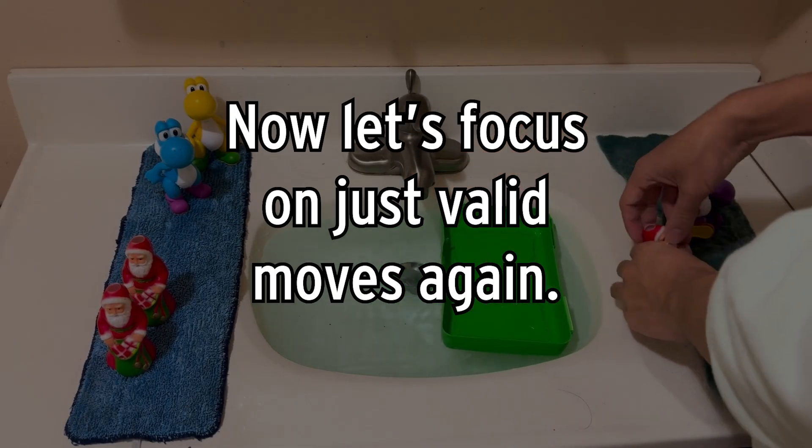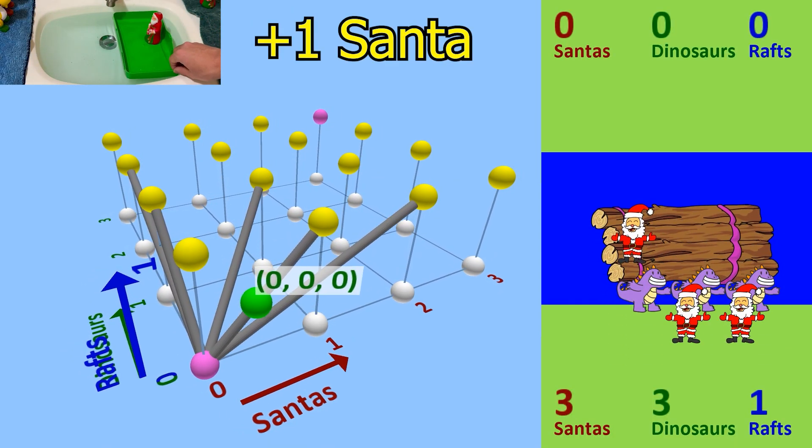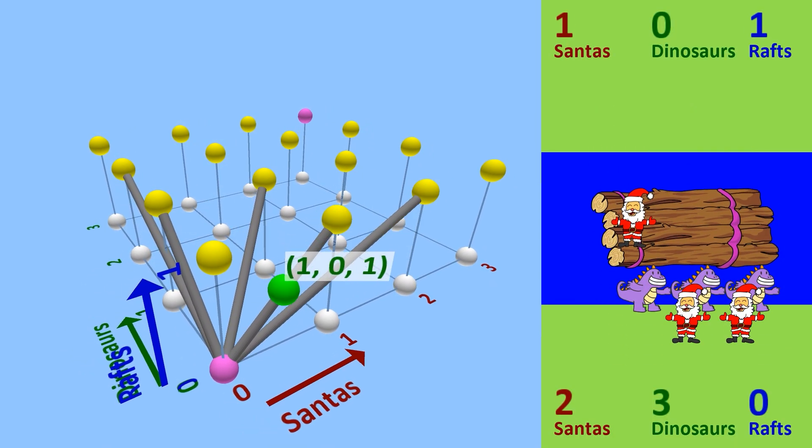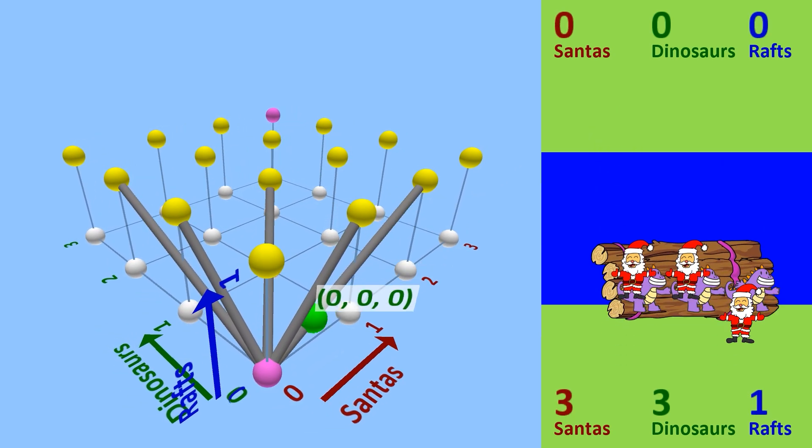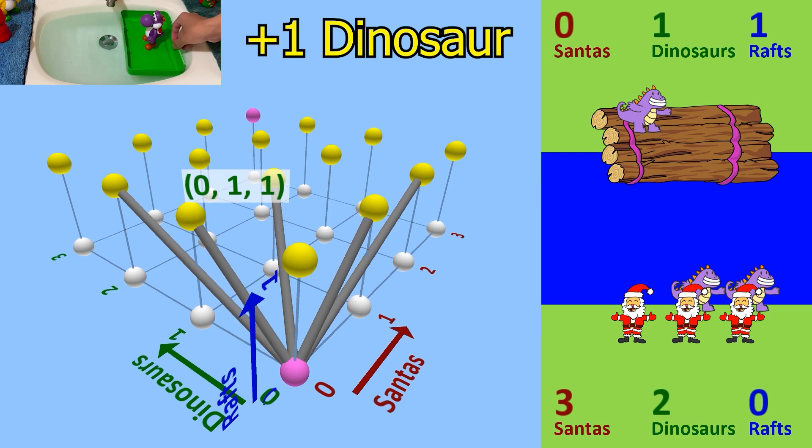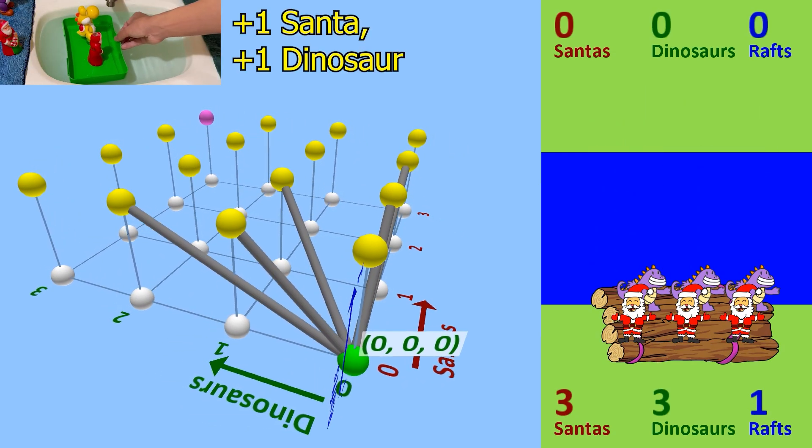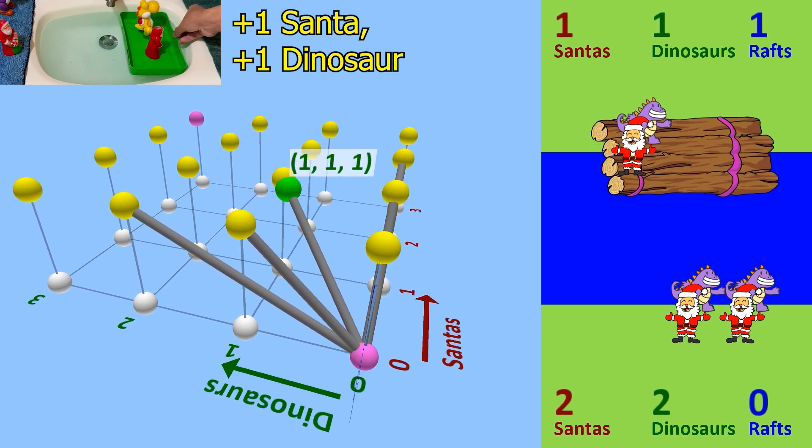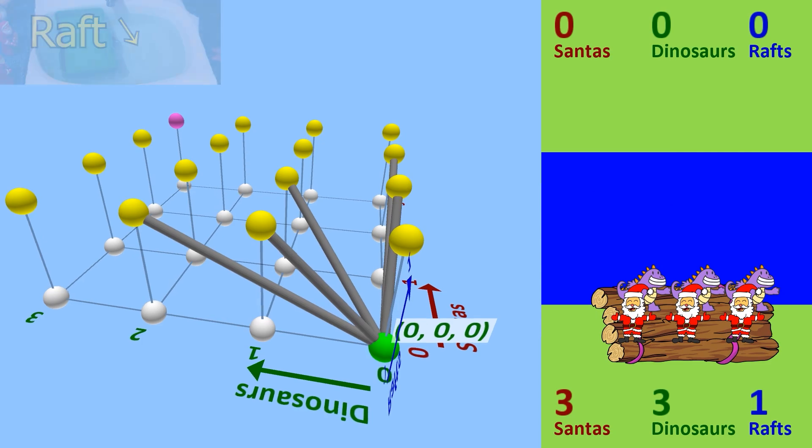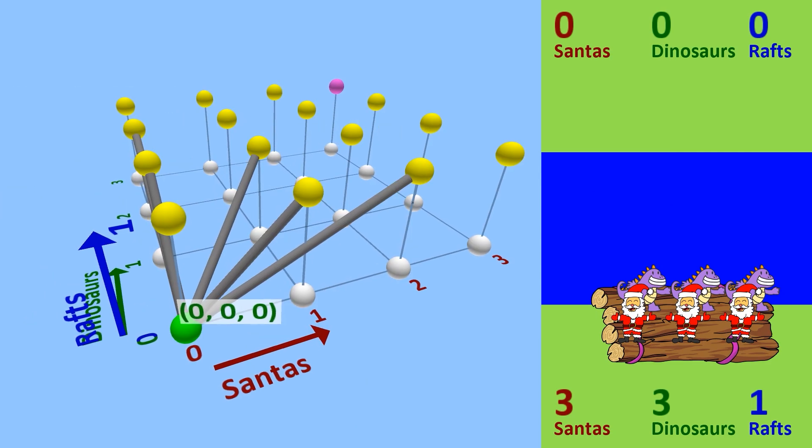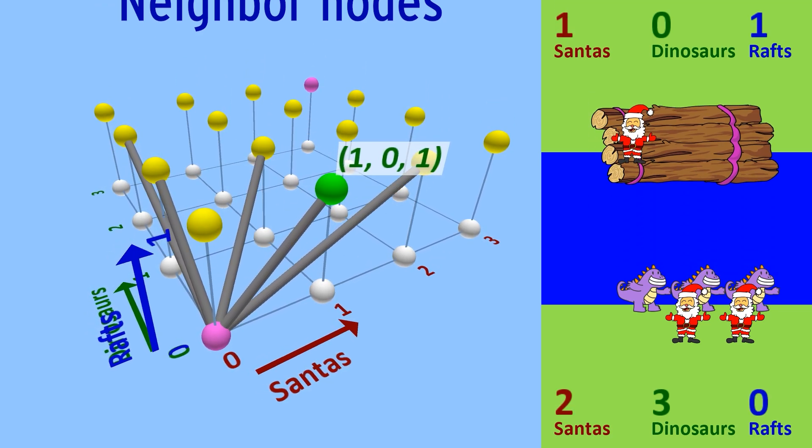Now let's focus on just valid moves again. As I mentioned before, we can move one Santa, which corresponds with the vector (1, 0, 1). Or two Santas, which corresponds with the vector (2, 0, 1). Or one dinosaur, which is (0, 1, 1). Or two dinosaurs, which is (0, 2, 1). Or finally, we can move one of each, which is (1, 1, 1). All of these moves also take the raft, which you can tell by all these vectors having a z-coordinate of 1. Starting from the origin, you can now see what neighbor nodes we are able to access with one move.